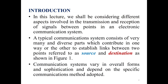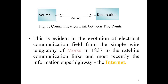In this lecture we shall be considering different aspects involved in the transmission and reception of signals between points in an electronic communication system. A typical communication system consists of very many and diverse parts which contribute in one way or the other between two points referred to as source and destination, as shown in figure one. Communication systems vary in overall forms and sophistication and depend on the specific communication method adopted.